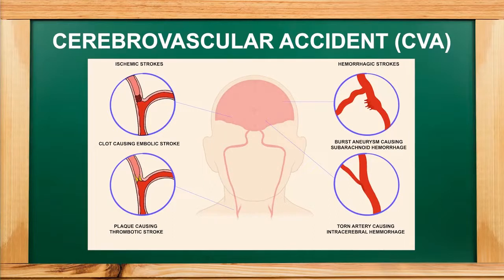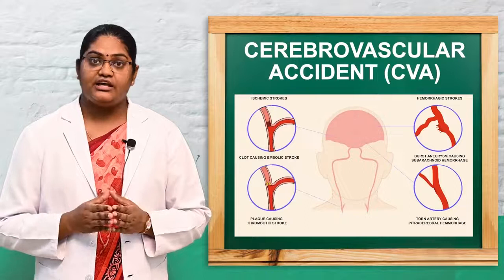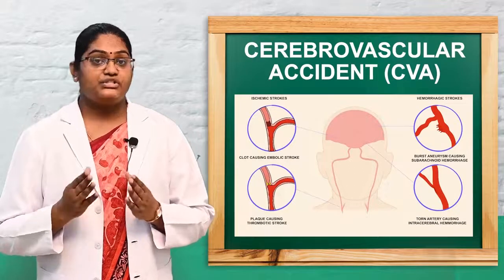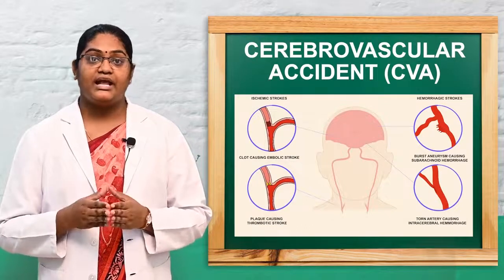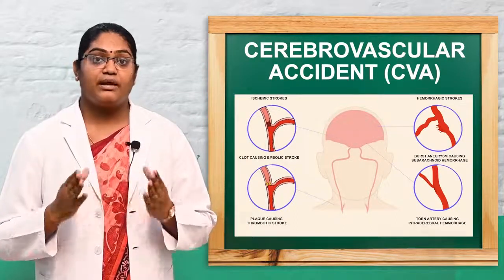Ischemic stroke is classified into three subtypes. The first is large artery thrombotic stroke, where a large artery is blocked by thrombus or atherosclerosis causing disruption of blood supply and occlusion. The second is small penetrating artery thrombotic stroke, involving occlusion and thrombus formation in small arteries. The third is cardiogenic embolic stroke, caused by valvular disorders and left ventricular thrombi.